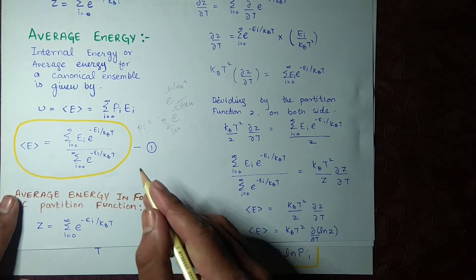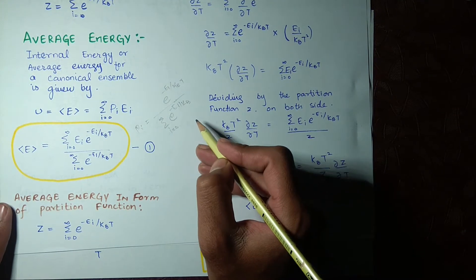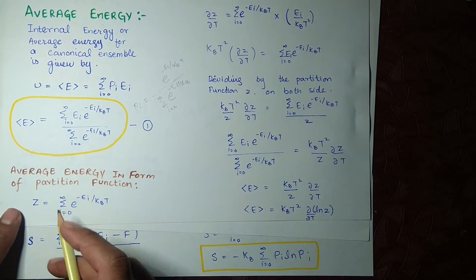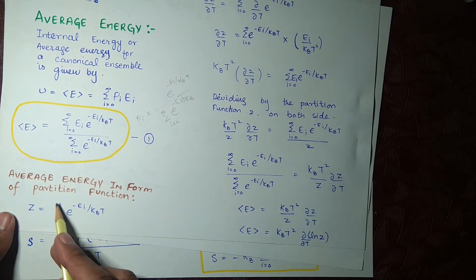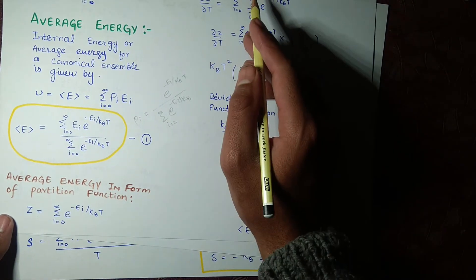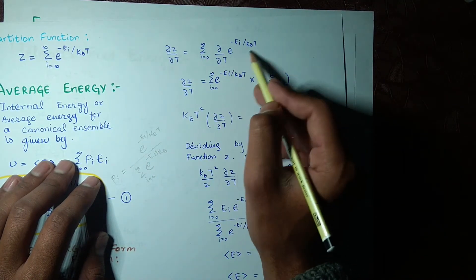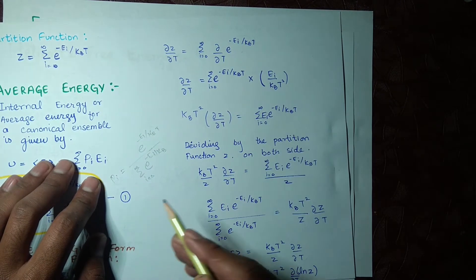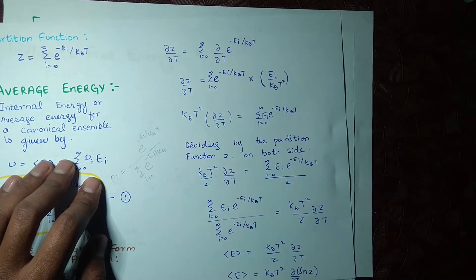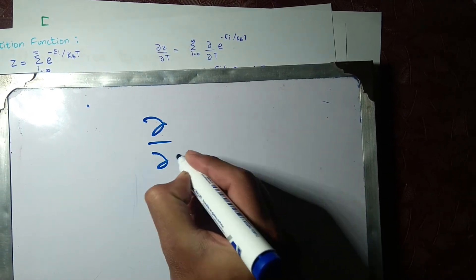Now, we know that Z is the partition function — this denominator is the partition function. We can write this partition function explicitly. When we take the partial derivative of this partition function with respect to temperature, the summation comes out and we are left with the derivative of the Boltzmann factor.